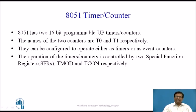Let us see the timer counter features of 8051. 8051 has two 16-bit up timers and counters — that means the counting is done in upward mode. The names of these two counters are T0 and T1 respectively. They can be configured to operate either as timers or as counters. The operation of the timer counters is controlled by two special function registers, TMOD and TCON.